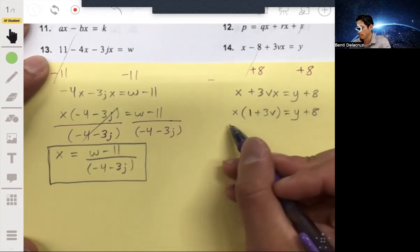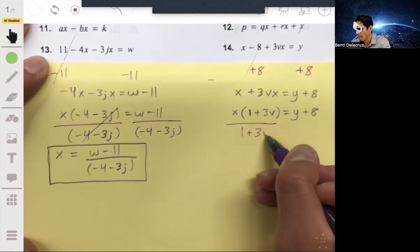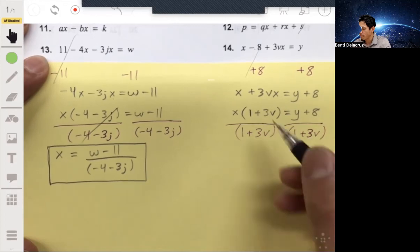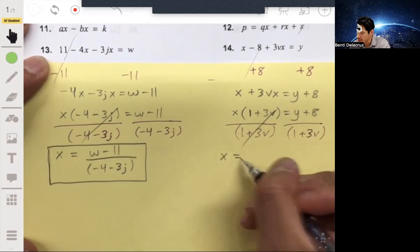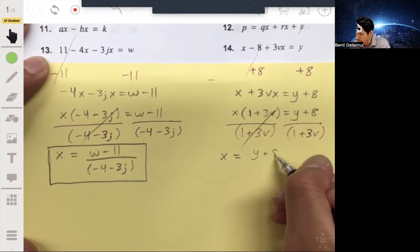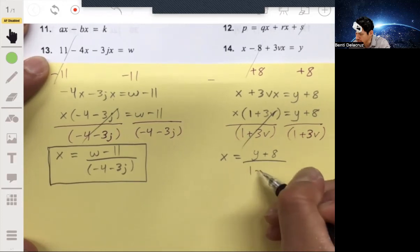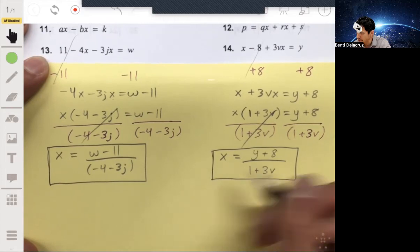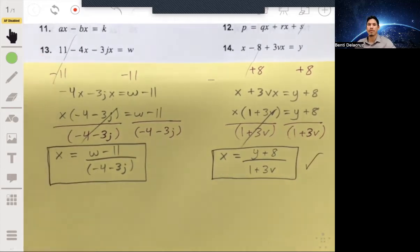Now we just divide by this group, the 1 plus 3V. And then you get X is equal to Y plus 8 all over 1 plus 3V. And there you go.